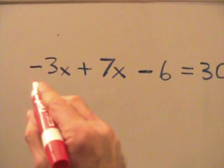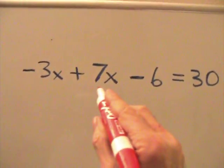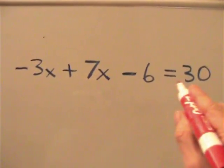For our problem, we've got negative 3x plus 7x minus 6 equals 30.